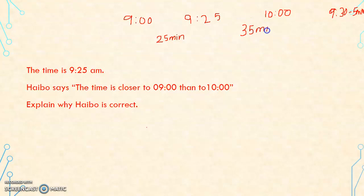Which is less? 25 minutes is less. So 9:25 is closer to 9 than to 10. So find the time difference. Time difference between 9 and 9:25 is 25 minutes. Similarly, time difference between 9:25 and 10 is 35 minutes. 25 minutes is less. So 9:25 is closer to 9 o'clock. So Hybo is correct.